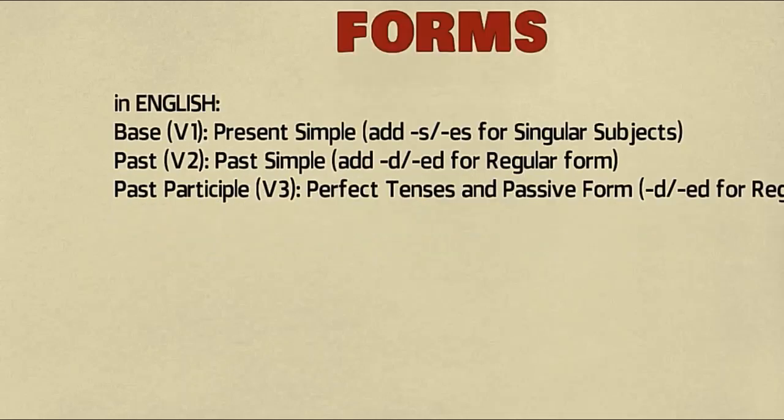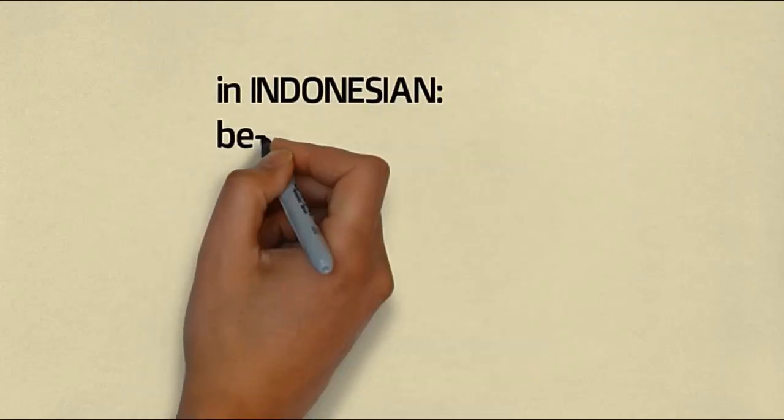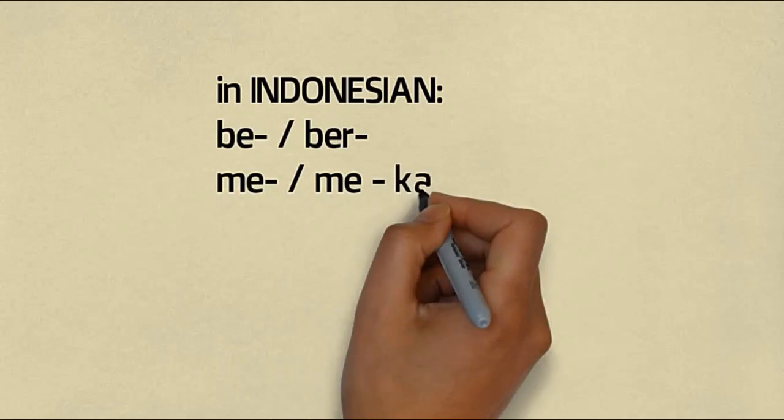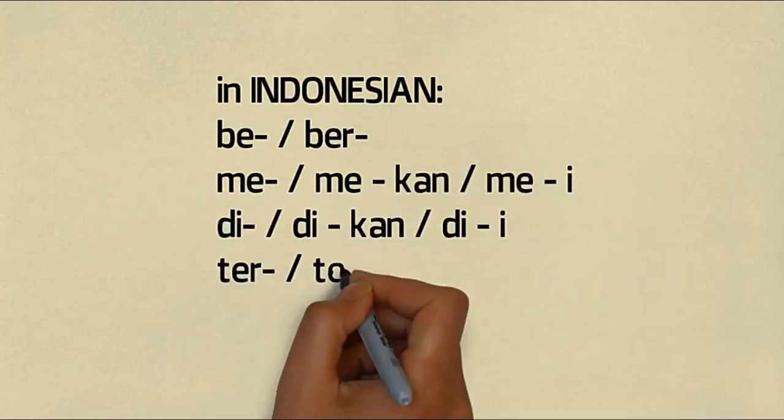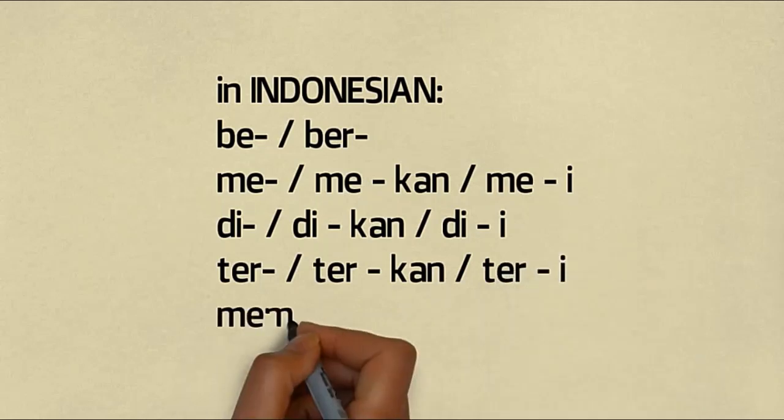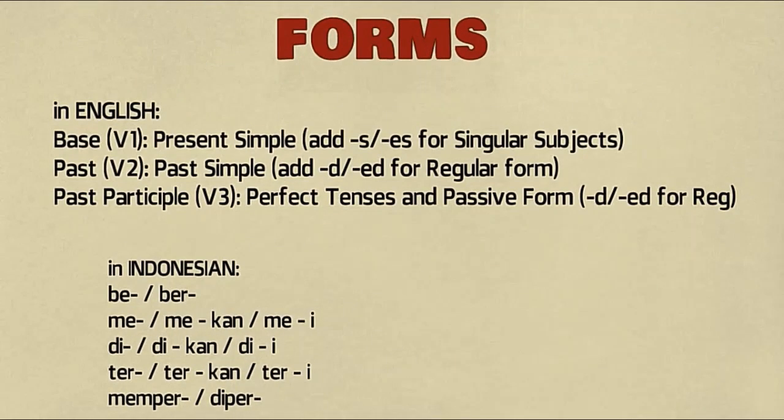In Bahasa Indonesia, we can see from the affixes used. Usually they start with ber-, me-, di-, ter-, or combinations like me-kan, me-i, ter-kan, or memper-, diper-. These are the forms of verbs that can help you identify them in sentences or paragraphs, both in English and Bahasa Indonesia.